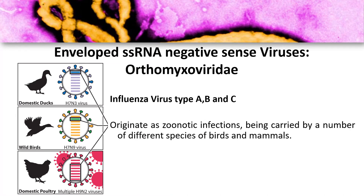For Group 5, first we will discuss Orthomyxoviridae — the family where influenza belongs. For influenza virus, we have Type A, B, and C. It originates as zoonotic infections carried by different species of birds and mammals. For example, H7N3 for domestic ducks, H7N9 for wild birds, and multiple H9N2 viruses for domestic poultry. Orthomyxoviridae, specifically influenza viruses, are zoonotic in nature. The genome is also segmented.